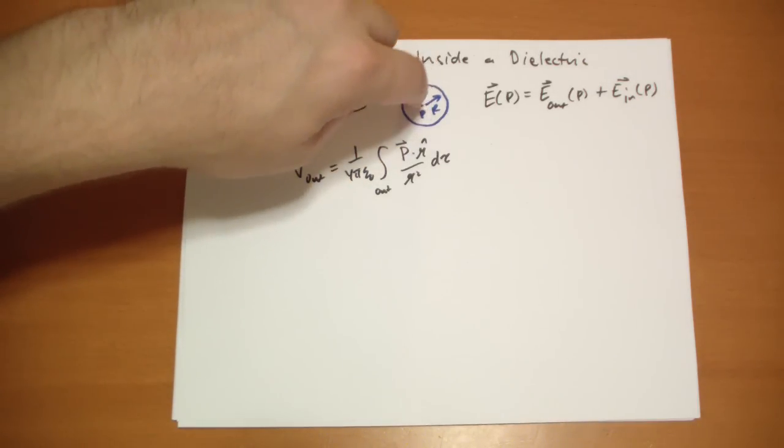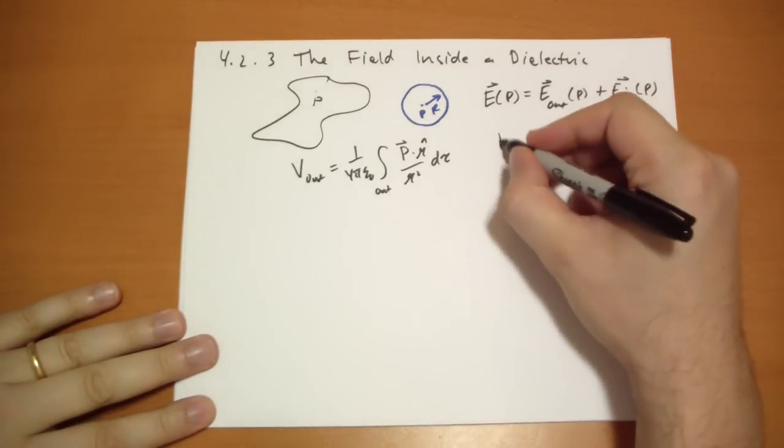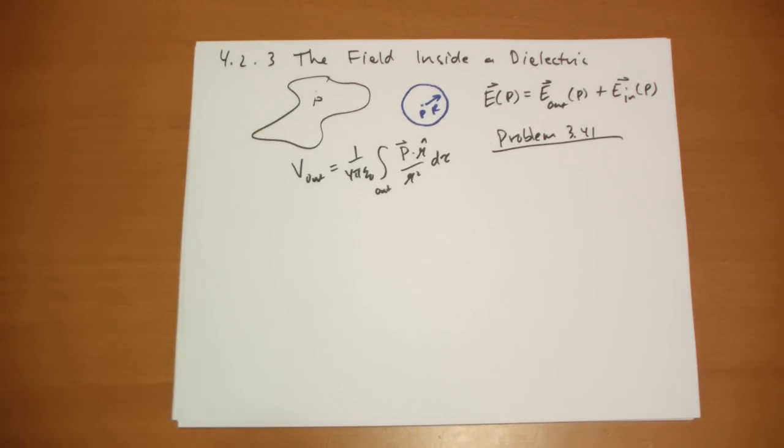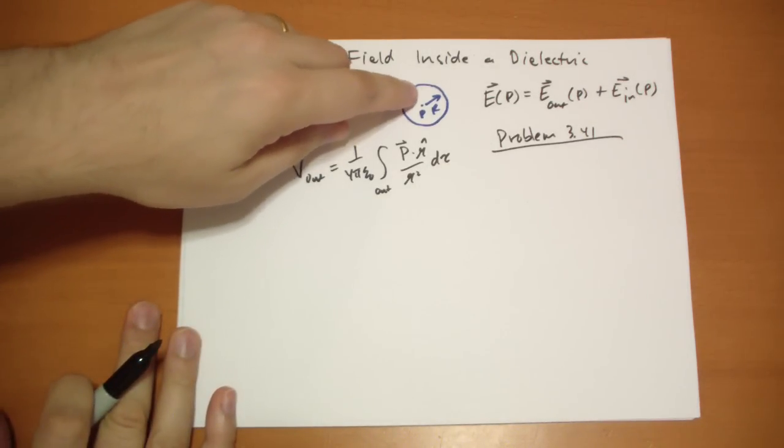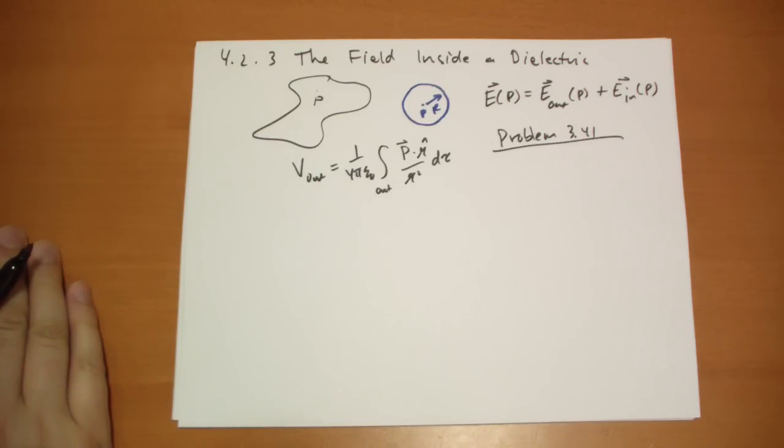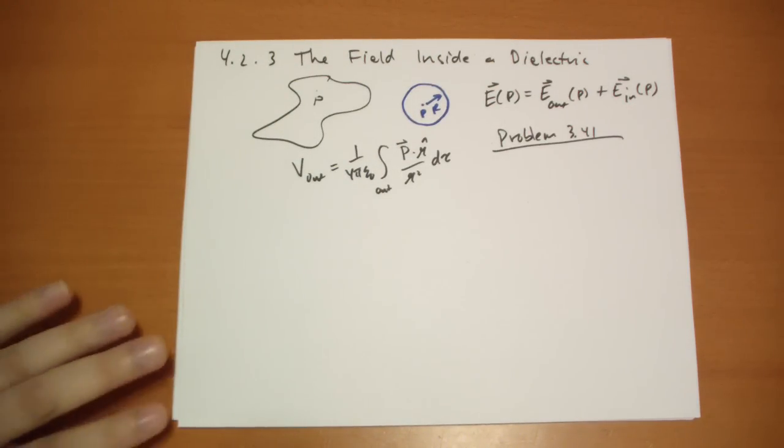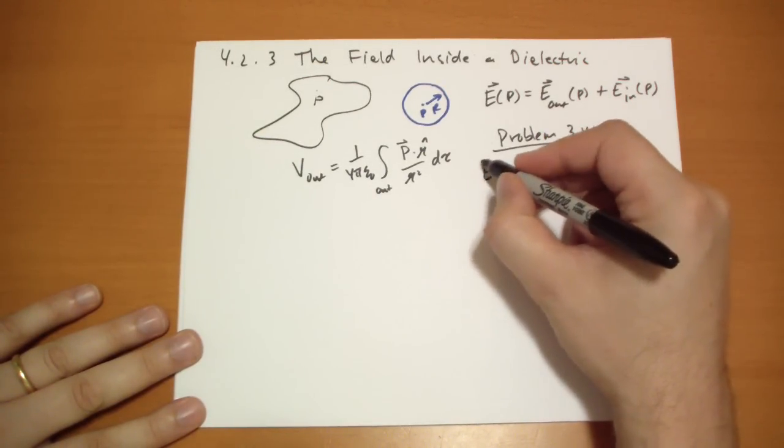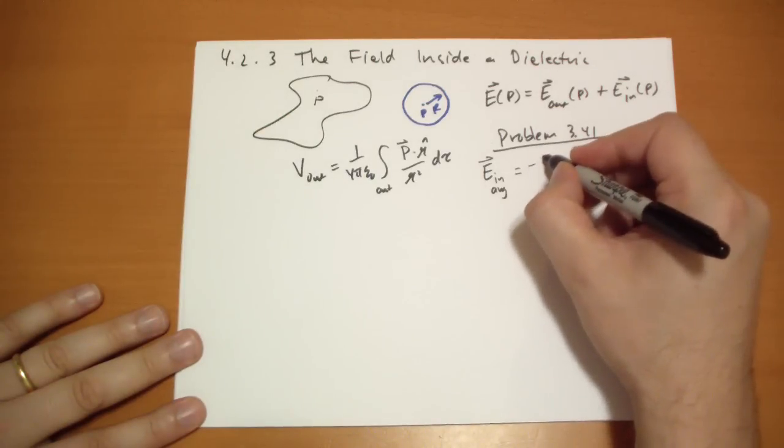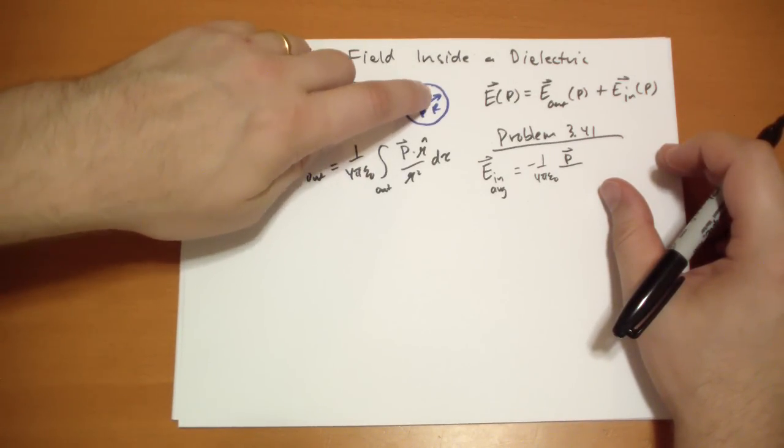Now we need to think about what's going on due to the stuff on the inside of the sphere. Well, if you did problem 3.41 - if you didn't, go back and do it. It's a good one to fight with for a while. You would have found out that the average of the fields - so if you take this volume and you average the field over that volume, and you take any point configuration charge configuration inside the sphere, then the average of the inside is going to be equal to negative 1 over 4 pi epsilon naught times the dipole moment of each given particle which is just the distance from the center there to the particle.